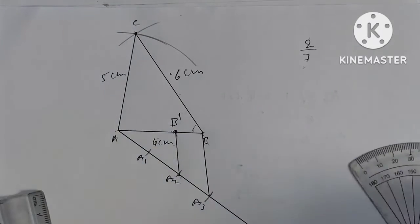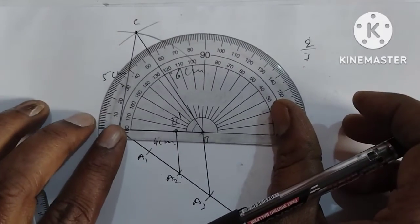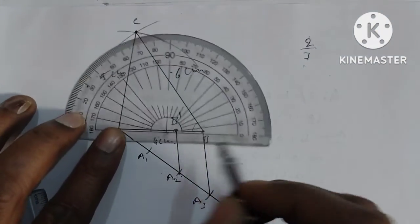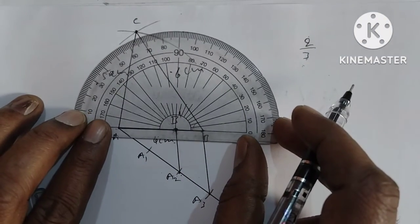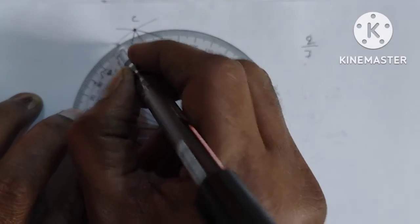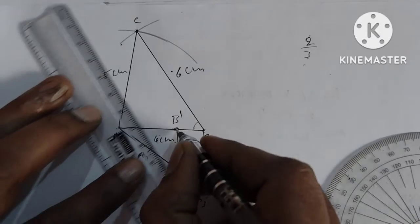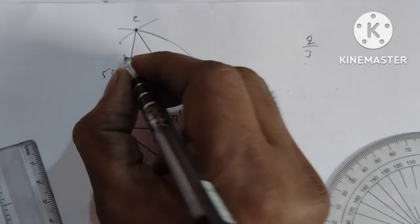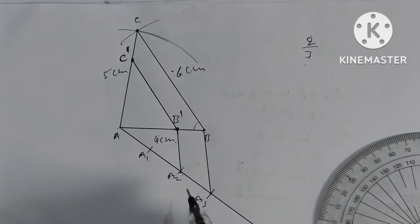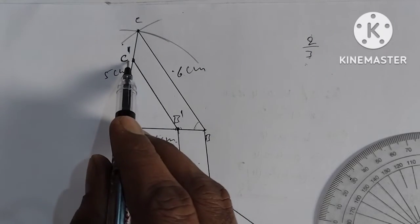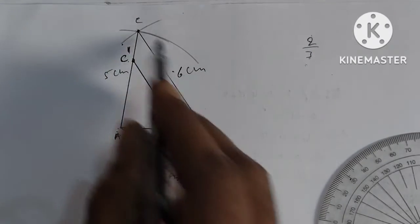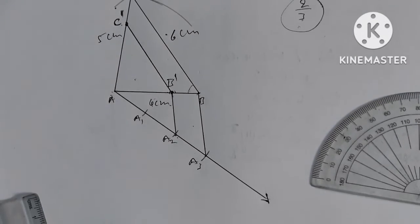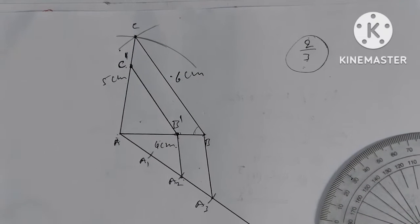Now we measure angle B. Angle B is 55 degrees, so we measure the same angle — 55 degrees — here at B dash. We join this angle to get point C dash. Now we have the similar triangle A, B dash, C dash. This triangle is in the 2/3 ratio to the original. This completes the construction.